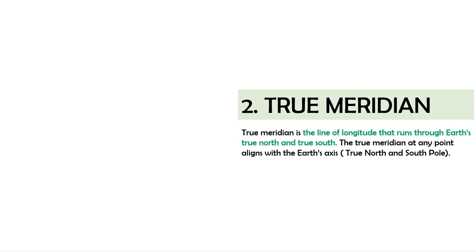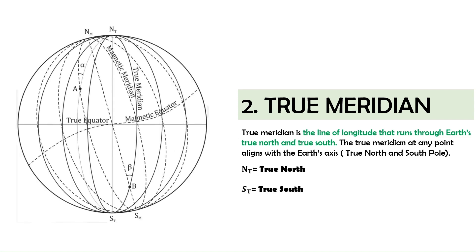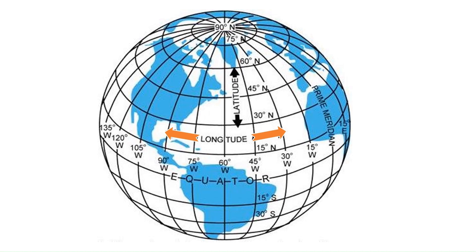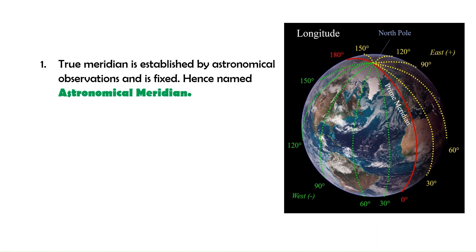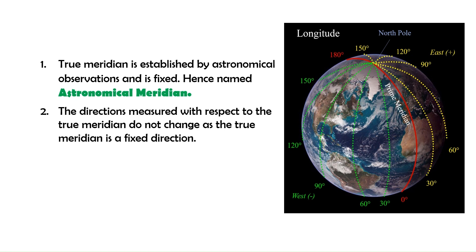True meridian is the line of longitude that runs through the earth's true north and true south. The true meridian at any point aligns with the earth's axis, i.e., true north as well as the south pole. Each point on the earth's surface can have its own unique true meridian. As you move eastward or westward from the prime meridian, the longitude values of the true meridian will vary. For example, a location with a longitude of 45 degrees will have a true meridian that passes through that point with a longitude of 45 degrees. True meridian is established by astronomical observations and is fixed for a particular location. Directions measured with respect to the true meridian do not change. For most surveys, the true meridian is used, especially for demarcating property lines.